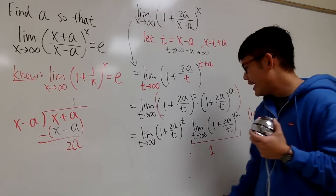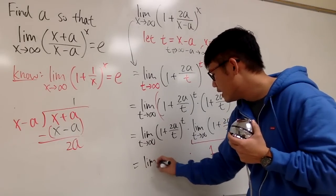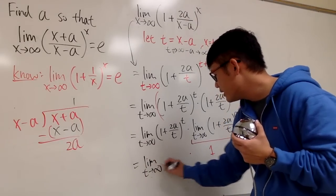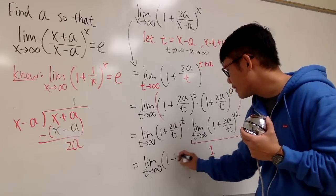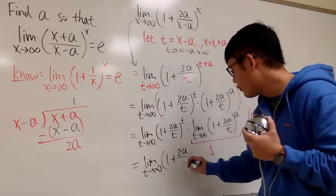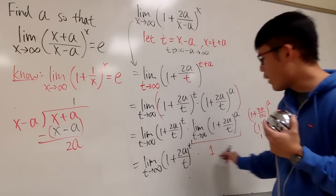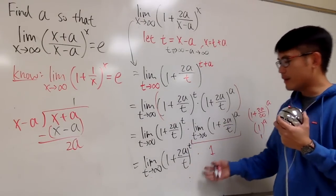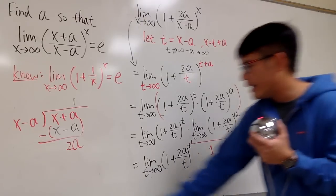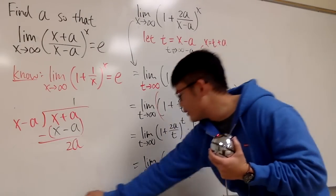So, we know this right here is just 1. And this is just the limit as t goes to infinity. And let me write this down: 1 plus 2a over t to the t's power. And we multiply by 1 from here. And now this is what we have.